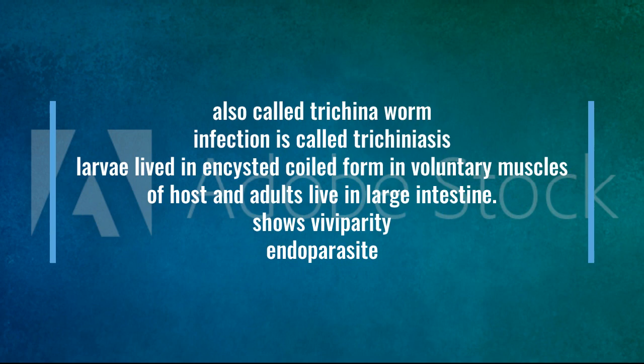The larva of Trichinella spiralis is found in the voluntary muscles, and the adult form is in the large intestine. It also shows viviparity. This is how we have finished this video.